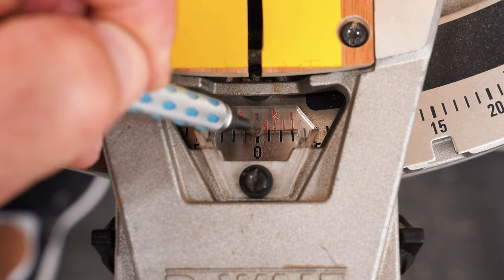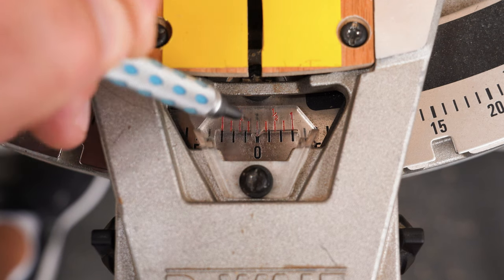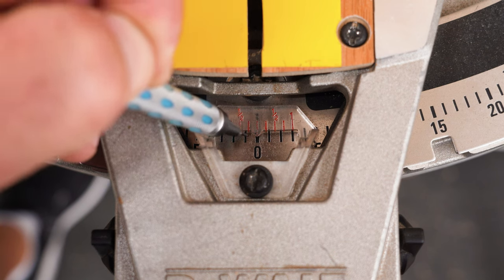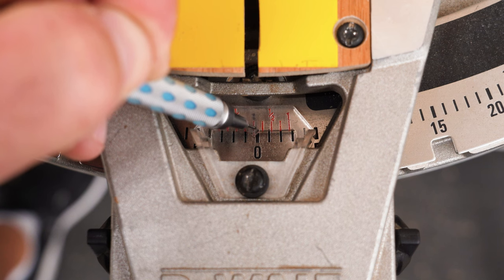With the center mark lined up with the zero on the main scale, we're at zero. This would give us a 90 degree cut. But if I take that first mark and line it up with the first mark on the left here, I've now scooted this blade over a quarter degree.